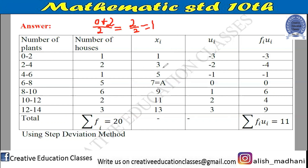We can see the difference between consecutive x_i values is 2. When the class length remains the same, h remains the same, so you get x_i values with the same difference: 1, 3, 5, 7, 9, 11, 13. Now since we are using the step deviation method, we need to find u_i.